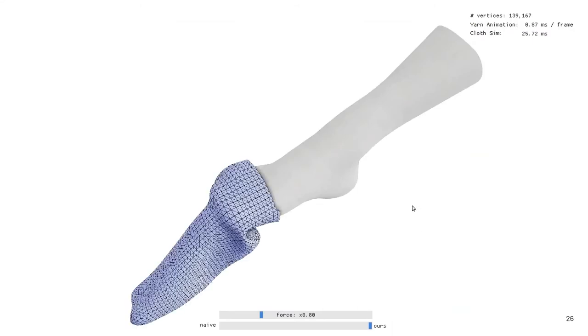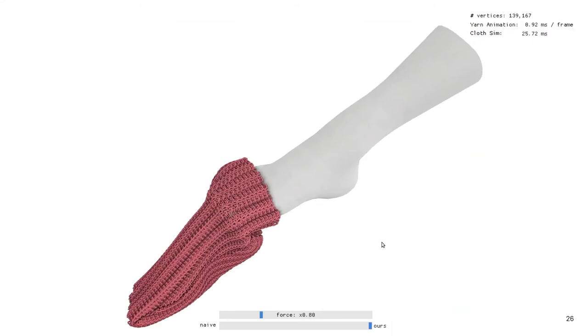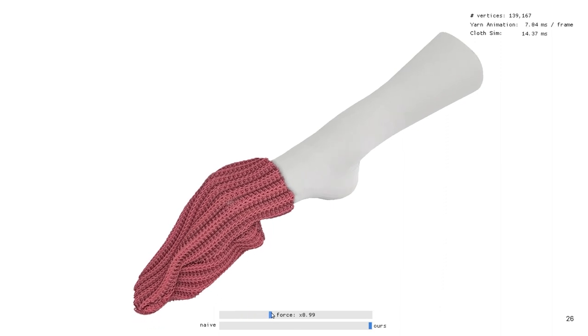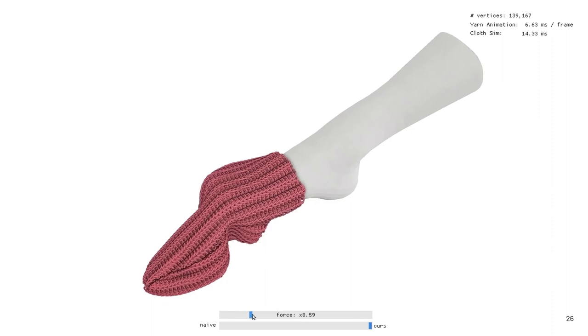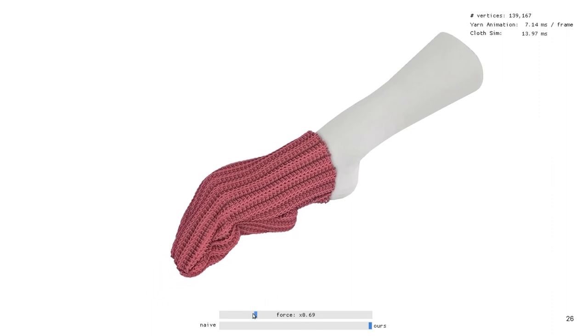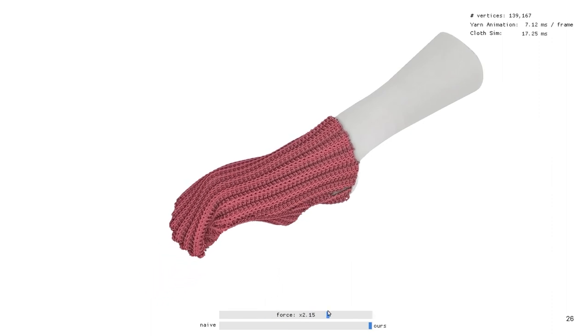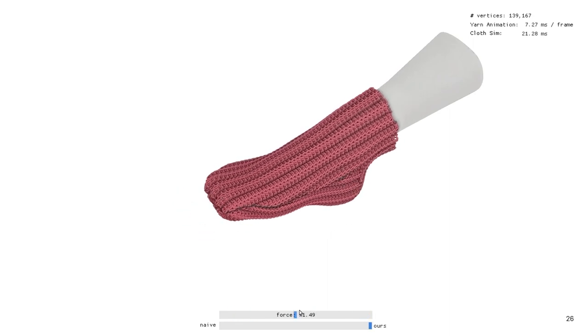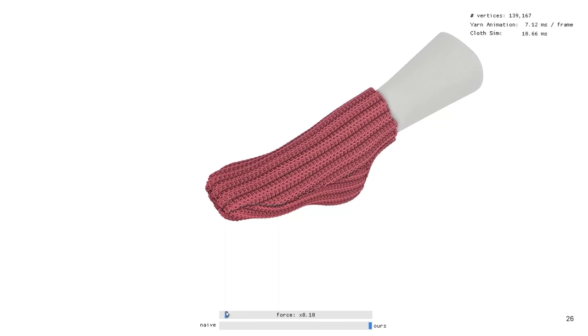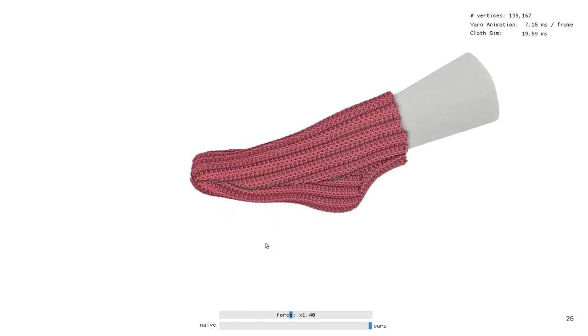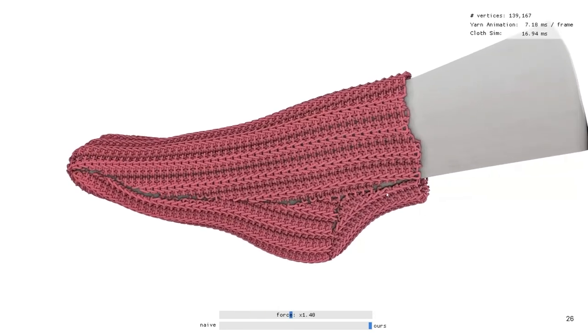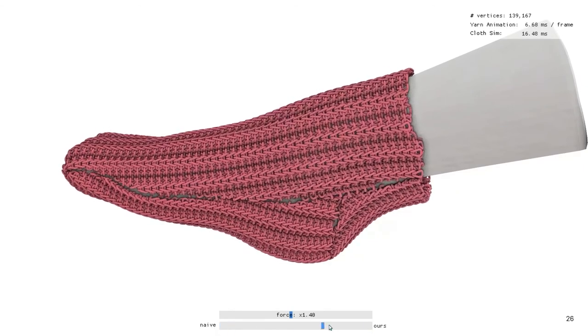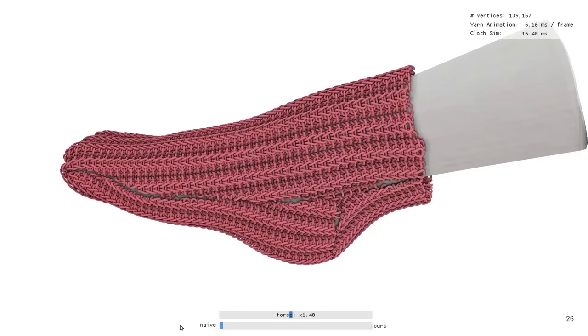Since our yarn animation is real-time, even for millions of yarn vertices, we can combine it with real-time mesh simulation for an interactive yarn experience. Here we're interactively controlling the pulling force on the rim of a sock to pull it over a foot, and we get all the nice effects from before, like the rips flattening. We again compare against naive embedding to highlight just how much local detail our method adds here.